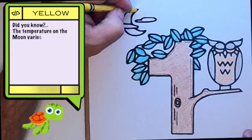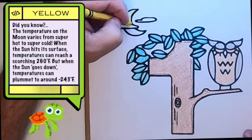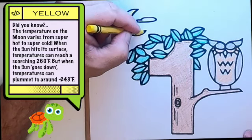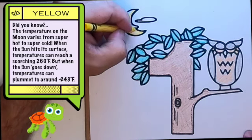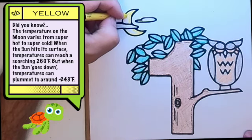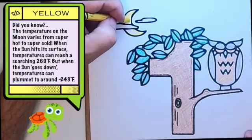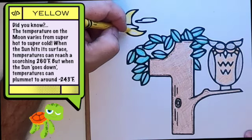Did you know, the temperature on the moon varies from super hot to super cold. When the sun hits its surface, temperatures can reach a scorching 260 degrees Fahrenheit. But when the sun goes down, temperatures can plummet to around minus 243 degrees Fahrenheit.